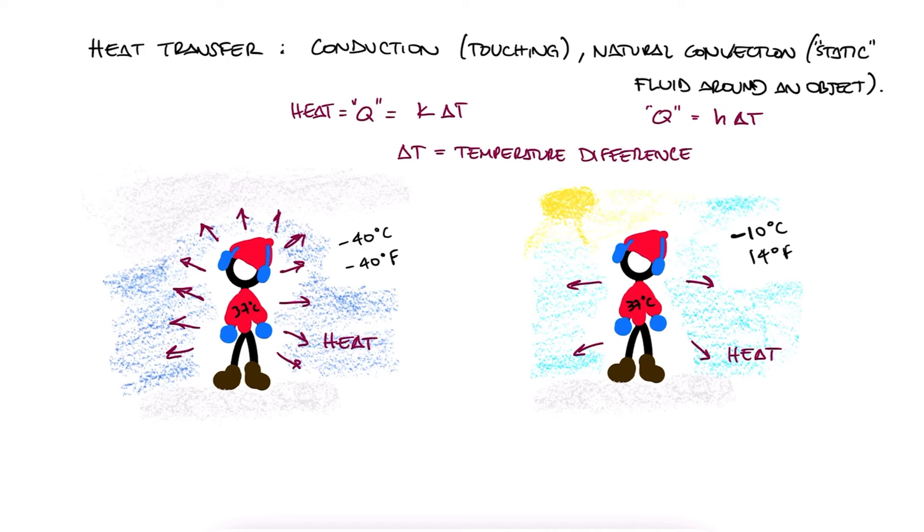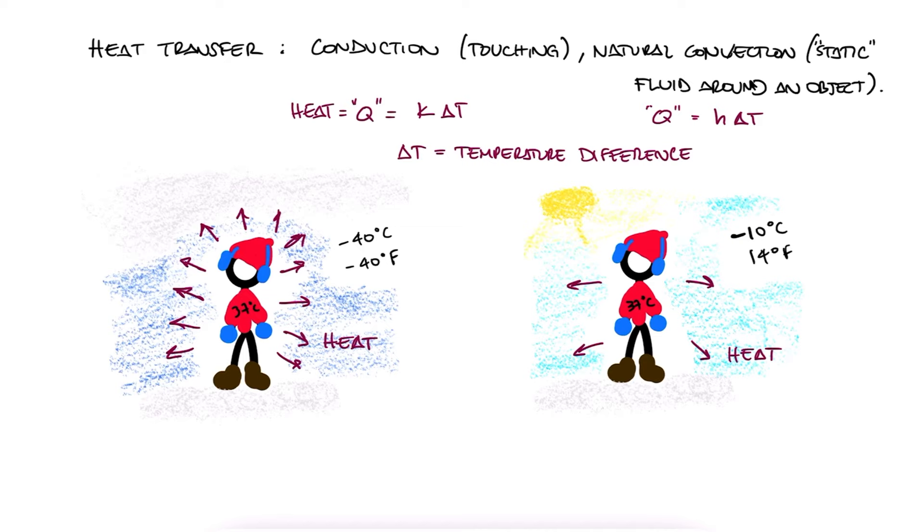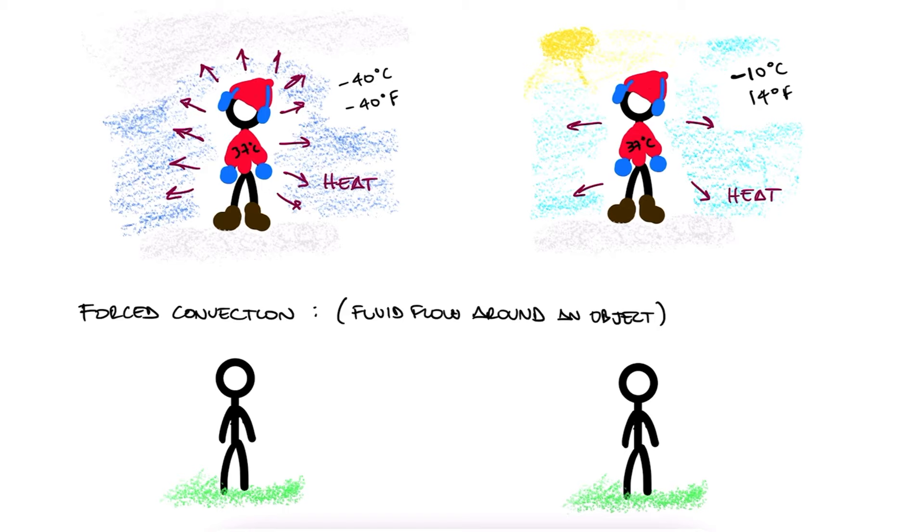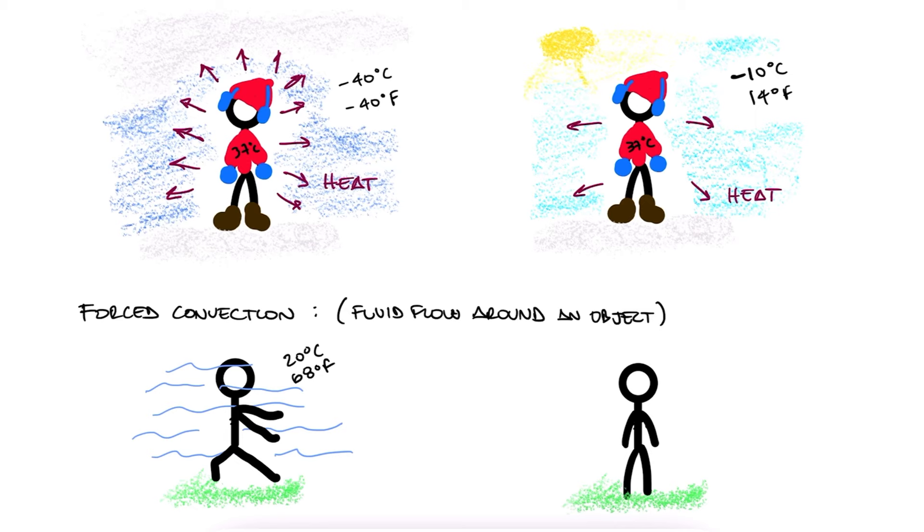However, in a course like heat transfer, you'll learn how, for example, through forced convection, a cold day with lots of wind can feel even colder than the temperature you'd expect it to be. A 20 degrees Celsius day with lots of wind can feel like a 10 degrees day with no wind. This is all to say that our perception and therefore definition of temperature is very limited and most of the time inaccurate.